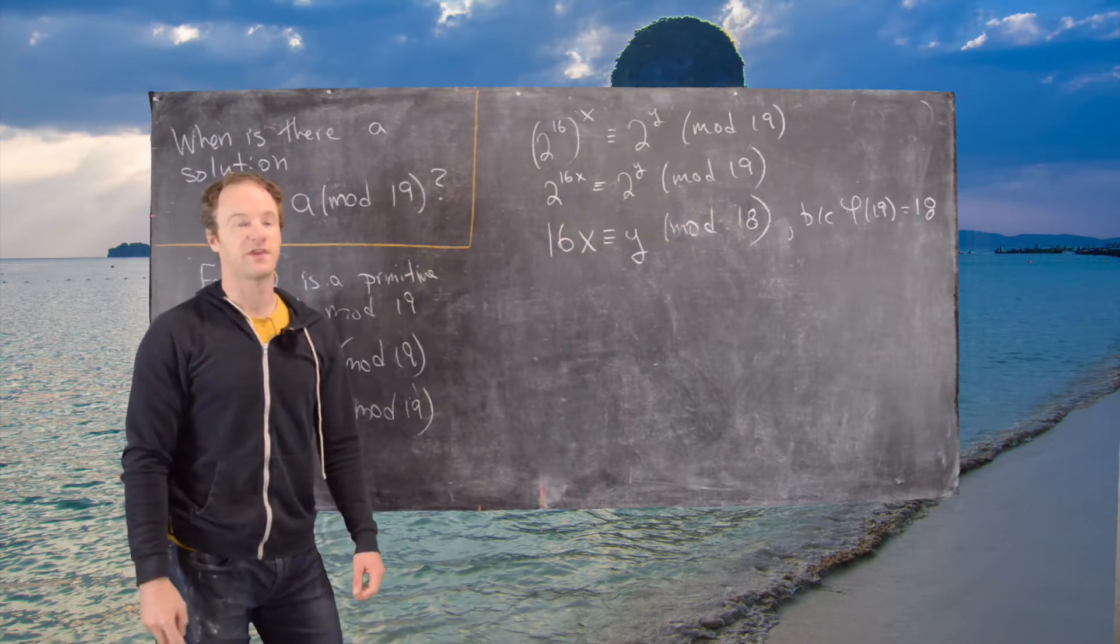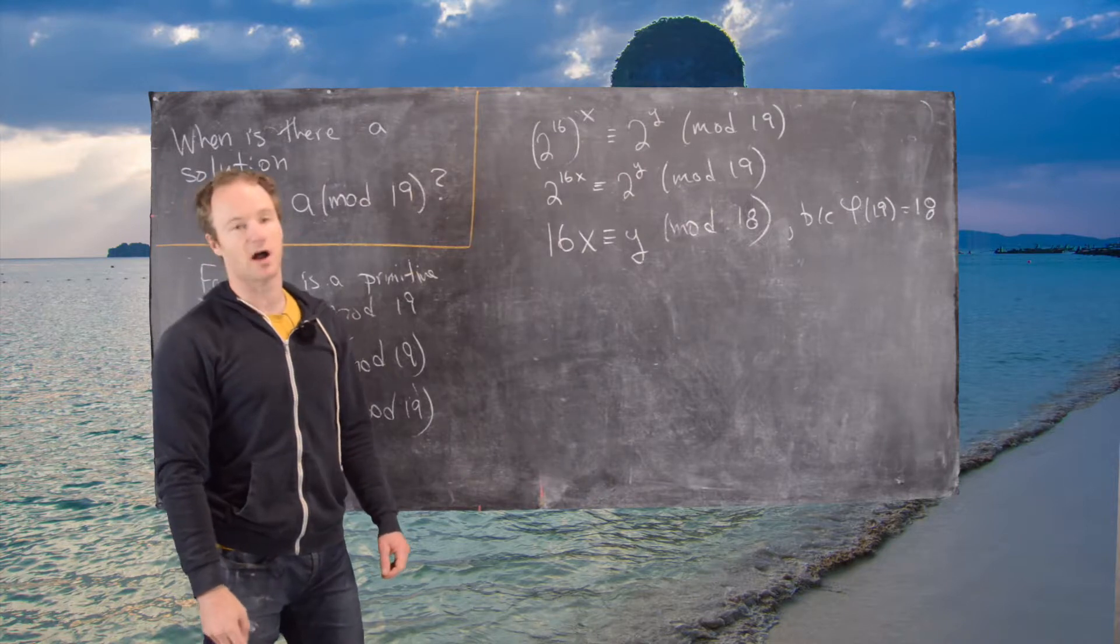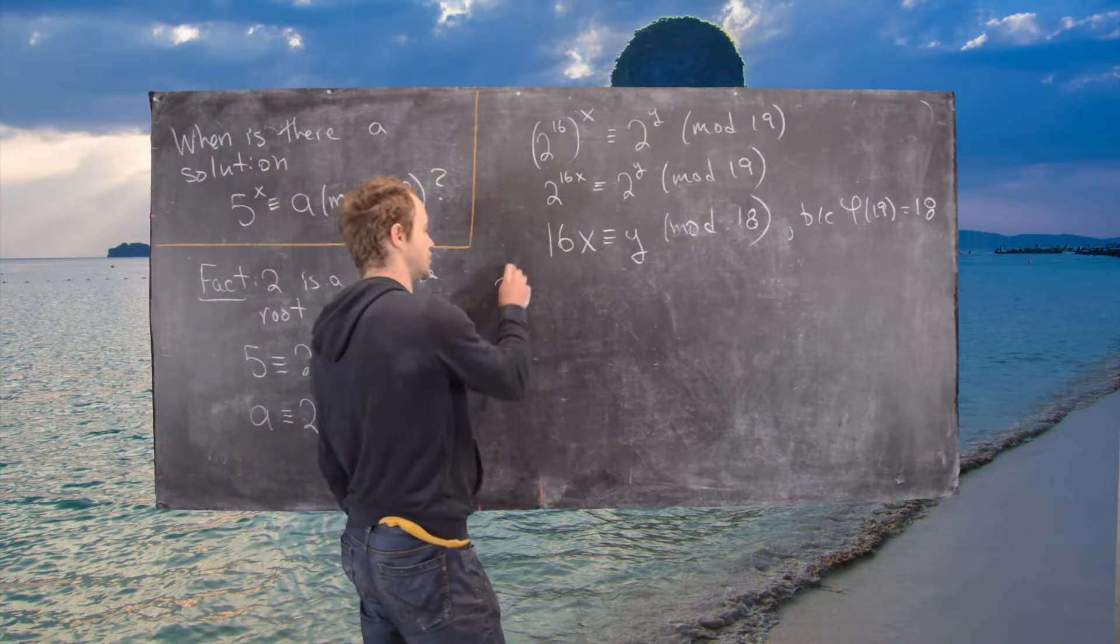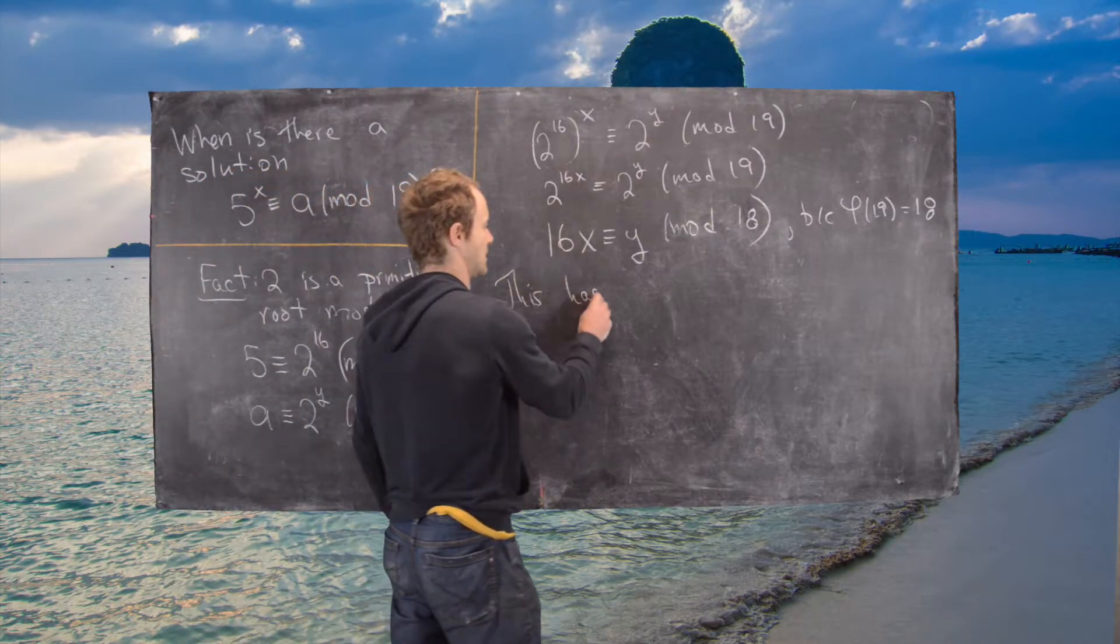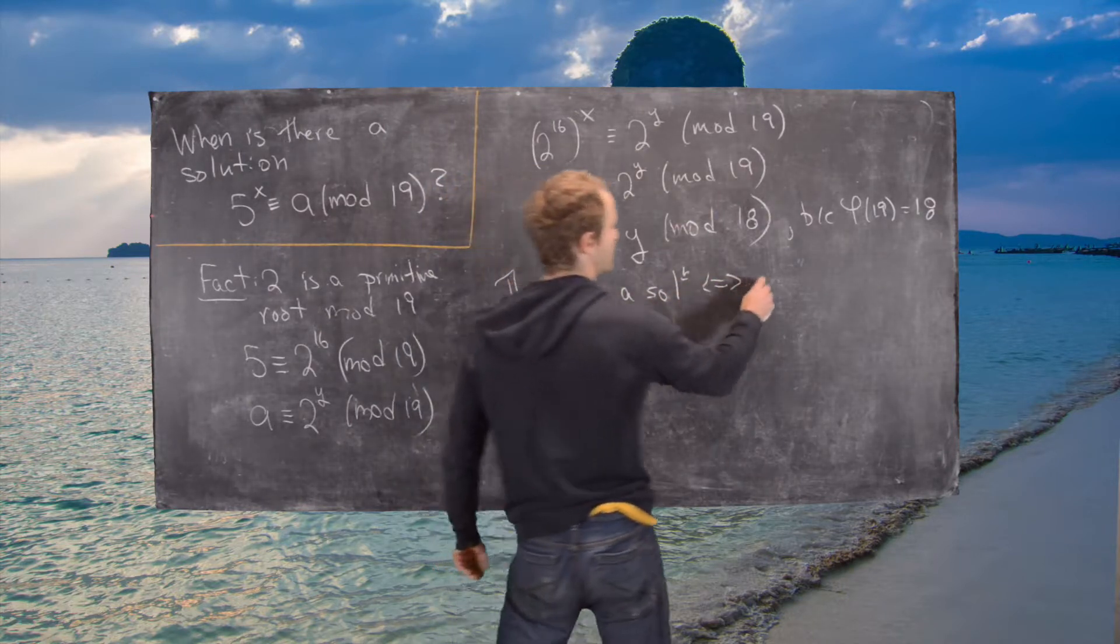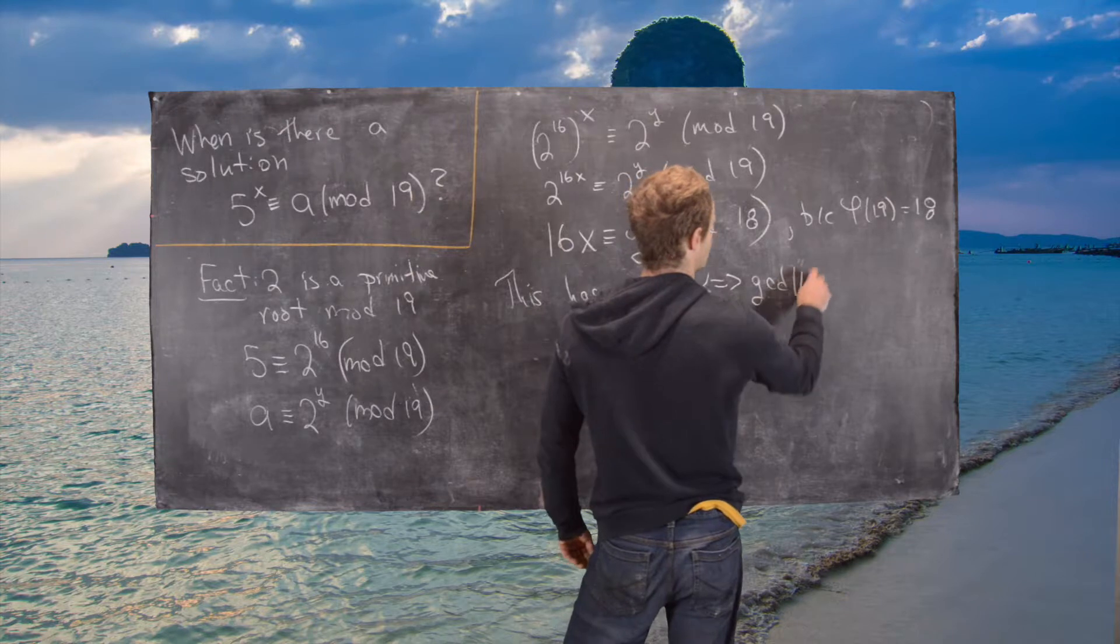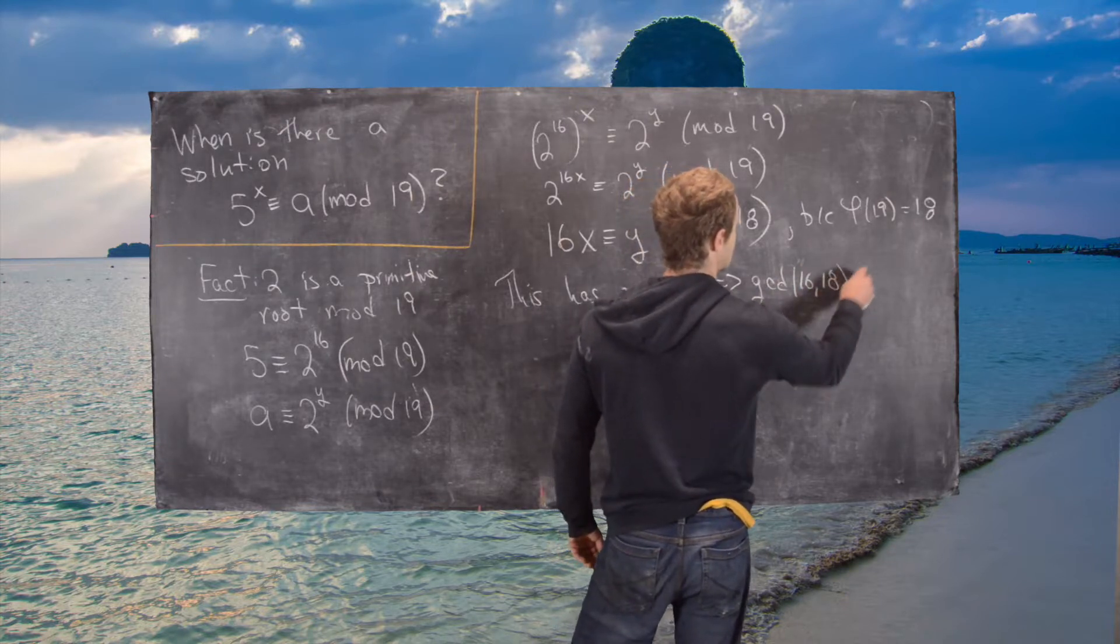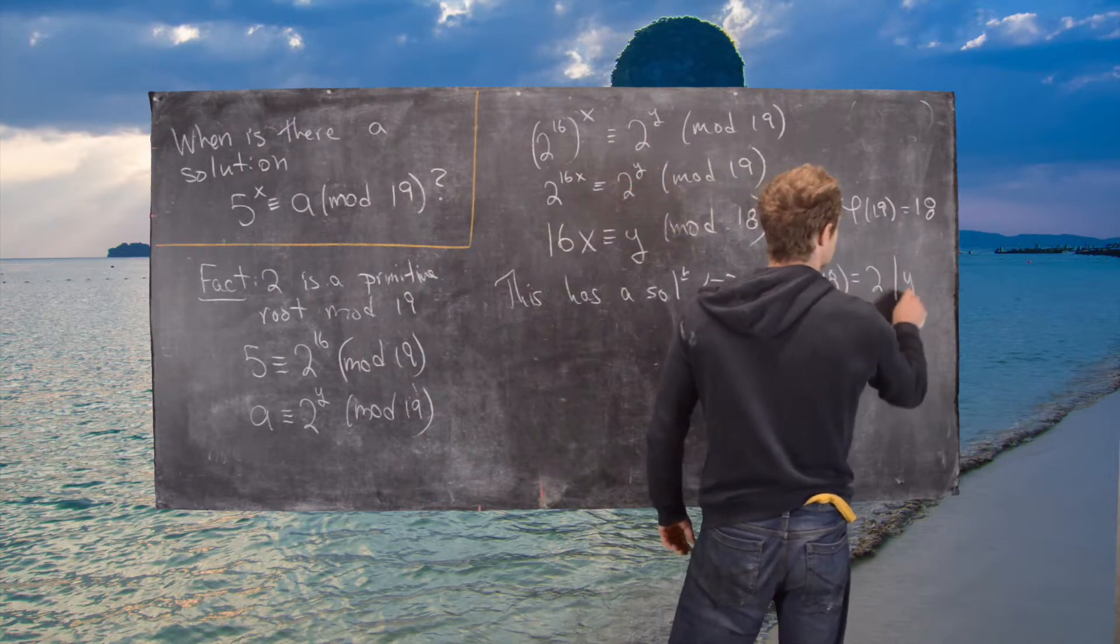And then from the theory of linear congruences, we know this has a solution if and only if the GCD of 16 and 18, which equals 2, divides y.